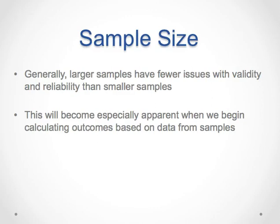The researcher determines sample size, or the number of participants selected from a population. Generally, larger samples have fewer issues with validity and reliability than smaller samples — we will see how larger samples produce more accurate findings in later chapters. However, we must also be careful that sample size is not so large that we would find differences no matter what.